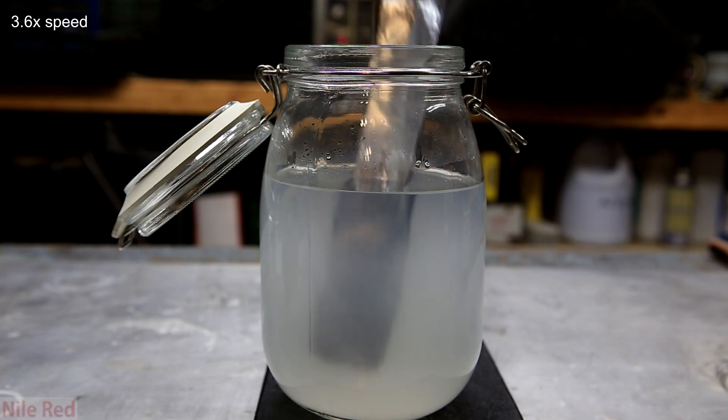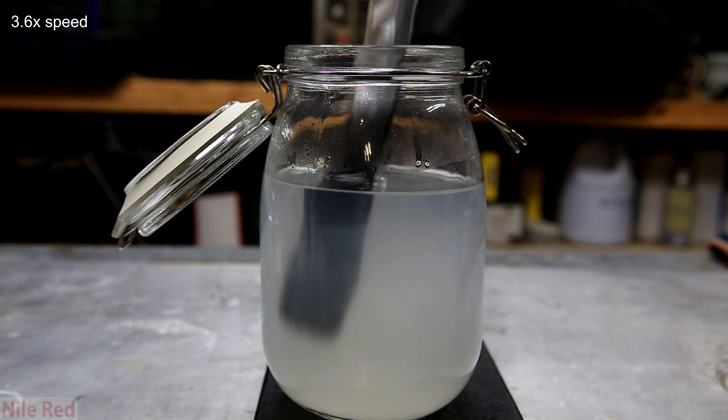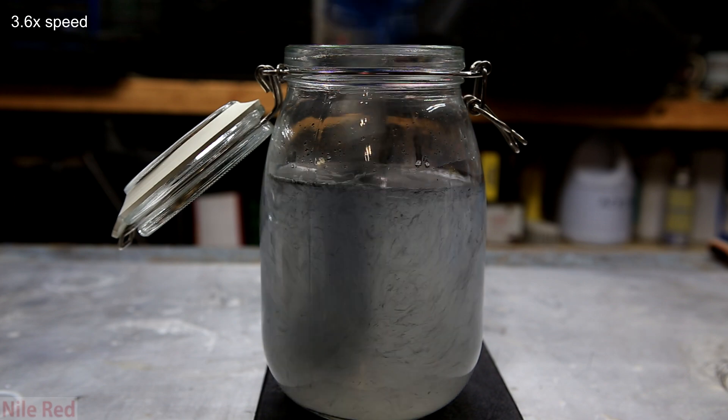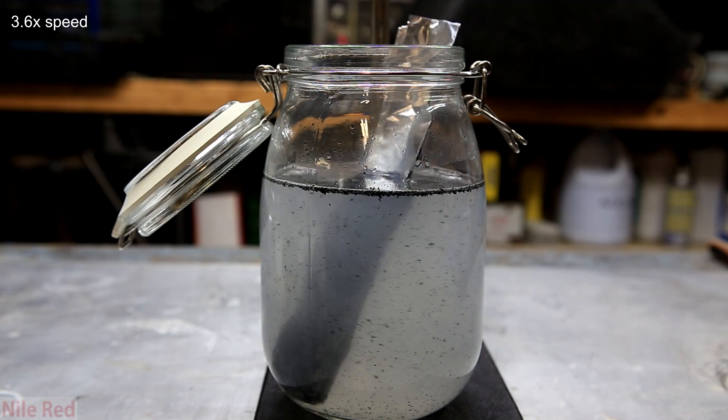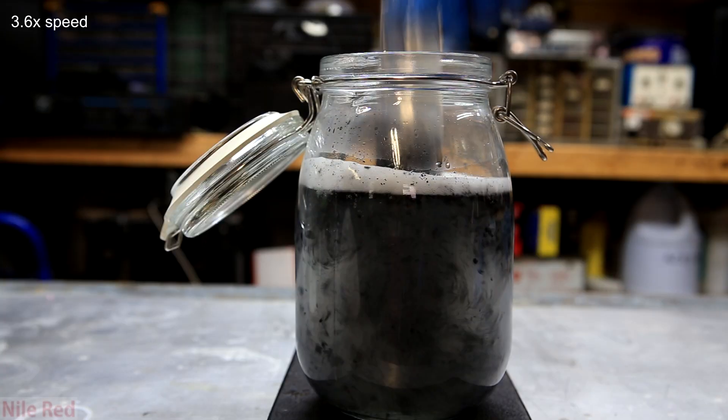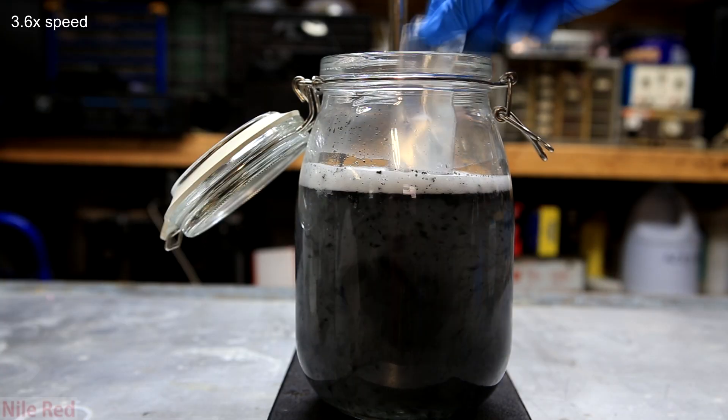The moment that the aluminum is added, black bismuth metal will start to precipitate out. The aluminum reacts with the bismuth chloride to form aluminum chloride and the bismuth metal. The solution is also still quite acidic due to the HCl, so that will also react with the aluminum.